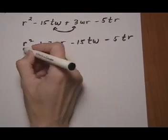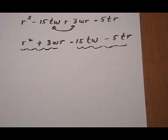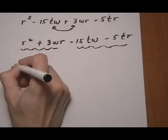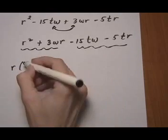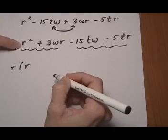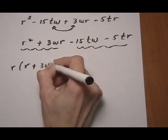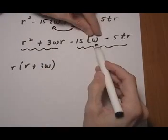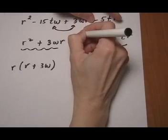And now I can start grouping. Group those two and group those two. First grouping, I have R in common. One R is the most I can pull out because that's all that the second term has. So R and then leftovers. There's one R left at the beginning, plus and then 3W is left for the second term.